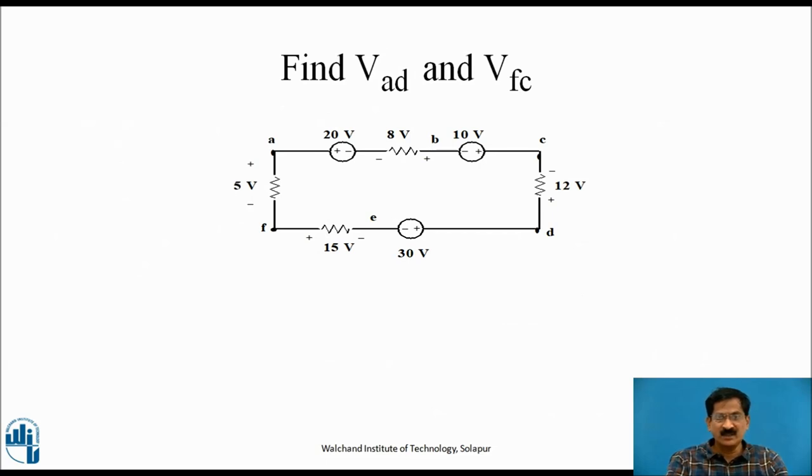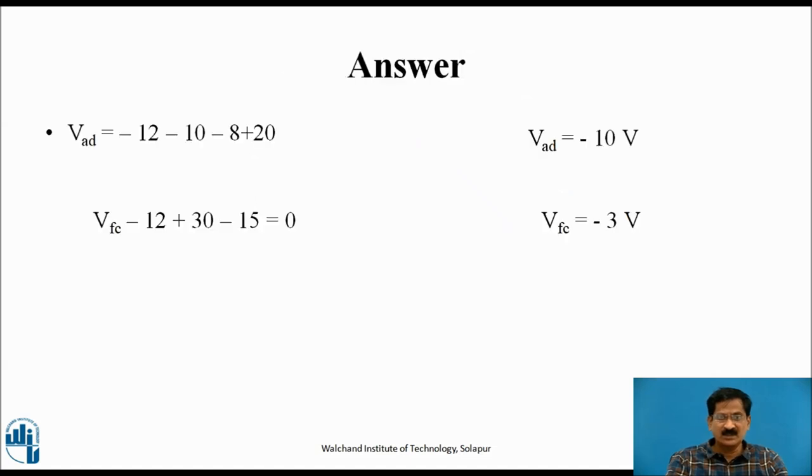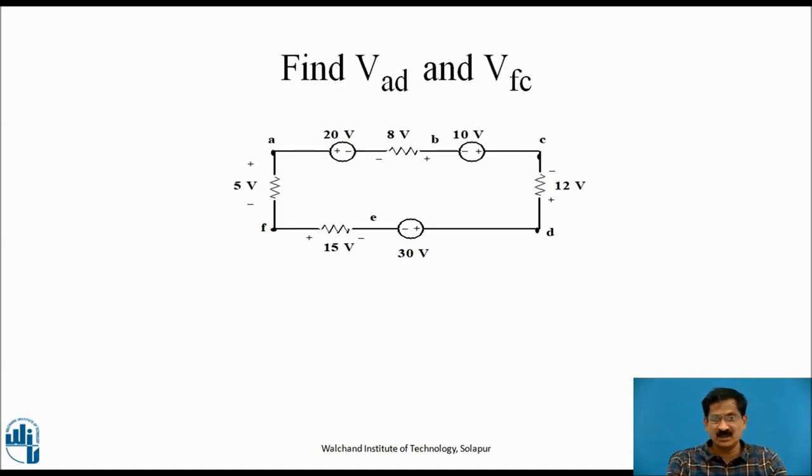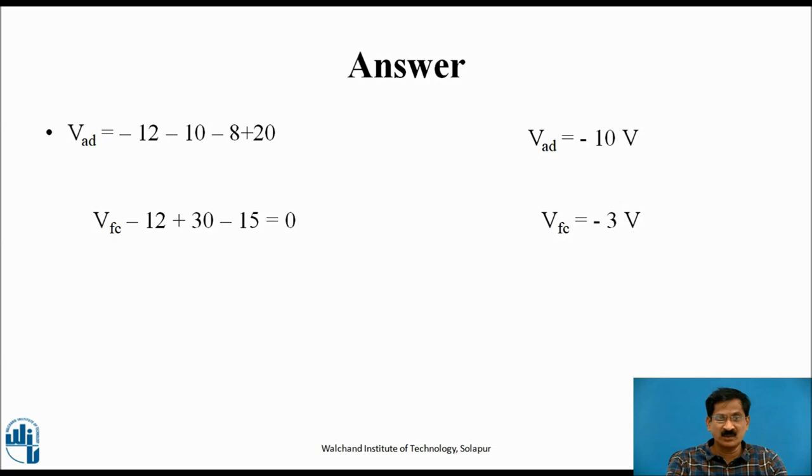Here is the question: Find VAD and VFC. VAD is the voltage at terminal A with respect to terminal D, where D is considered as the reference point. Starting from D, there is 12V which is minus 12V because it's plus to minus. Then point C with 10V, again minus 10V. From B onwards, it is minus 8V. Finally, 20V is plus 20V. So the equation becomes VAD equals minus 12 minus 10 minus 8 plus 20, which equals minus 10V.